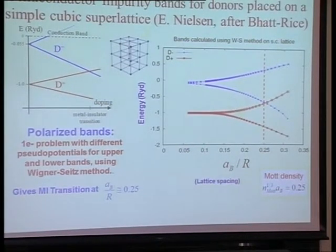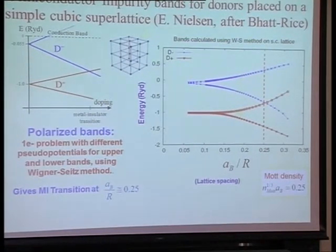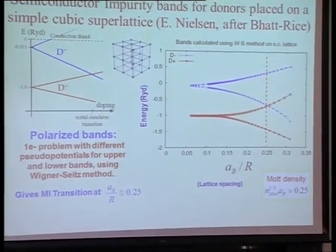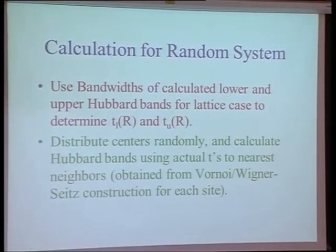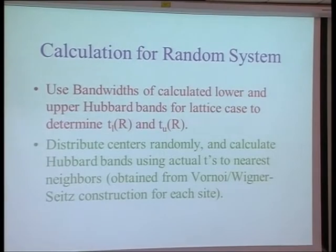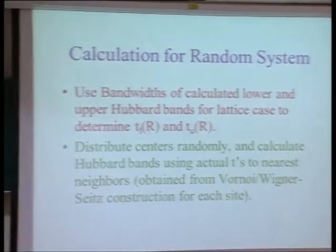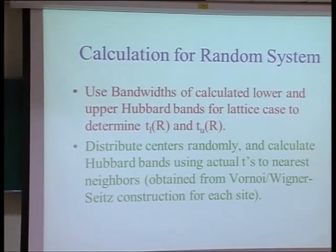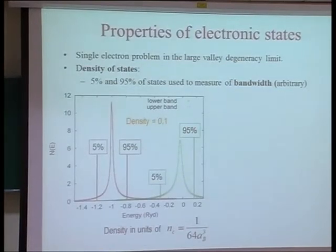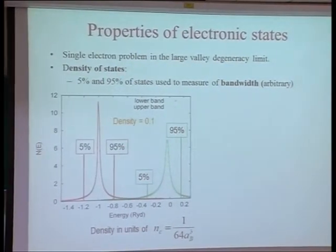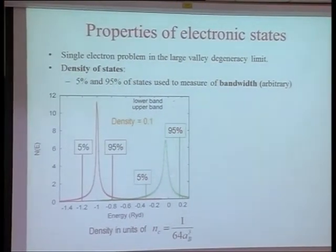In silicon, there are six valleys and two spin states, so there are 12 different states. But conceptually, it is in the infinite valley degeneracy limit. You don't have to worry about exchange, and then you can just do the calculation of the one-electron problem, both in the bottom and in the top upper Hubbard band. And then you can calculate the density of states that you get.